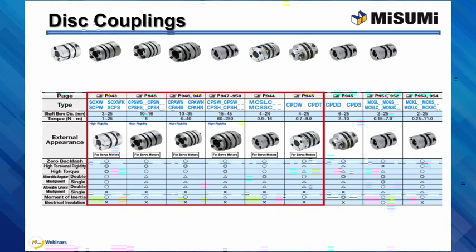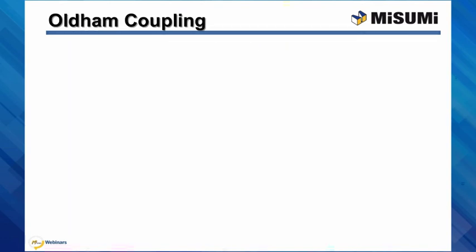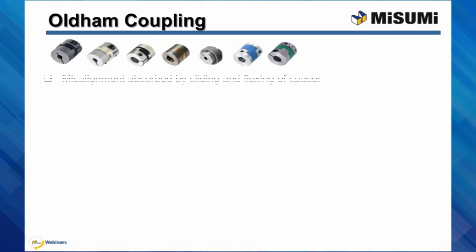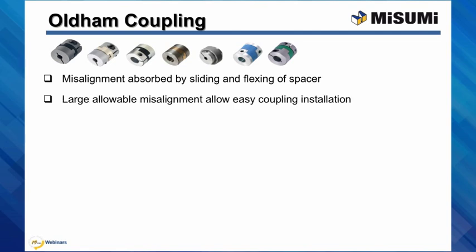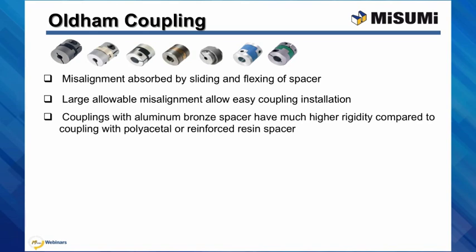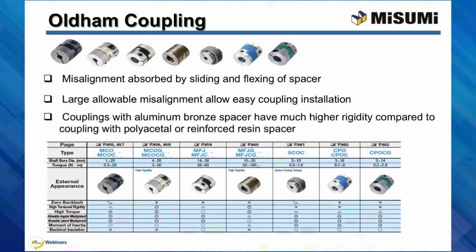Oldham couplings are made of two shaft hubs that are connected with a spacer. Misalignments are absorbed by sliding and flexing of the spacer. Large allowable misalignment allows for easy coupling installation. Depending on the spacer material, couplings have different characteristics — Oldham couplings with aluminum bronze spacer have much higher rigidity compared to couplings with polyacetyl or reinforced resin spacer. Overall, these couplings provide good balance in torque transmission, torsional rigidity, and misalignment absorption, and also have good electrical insulating properties.